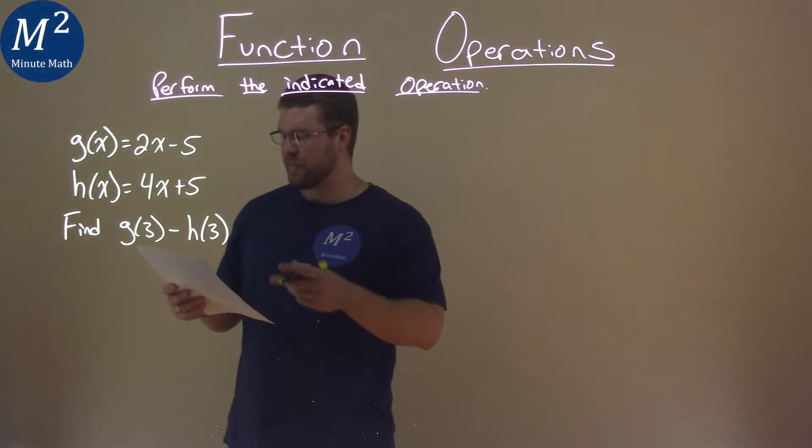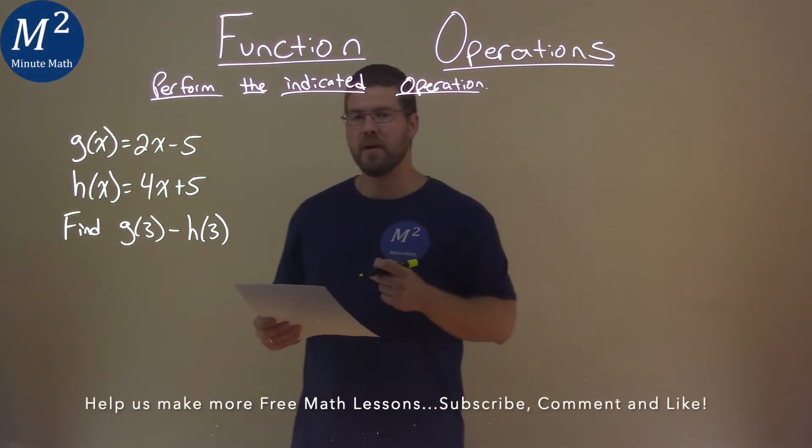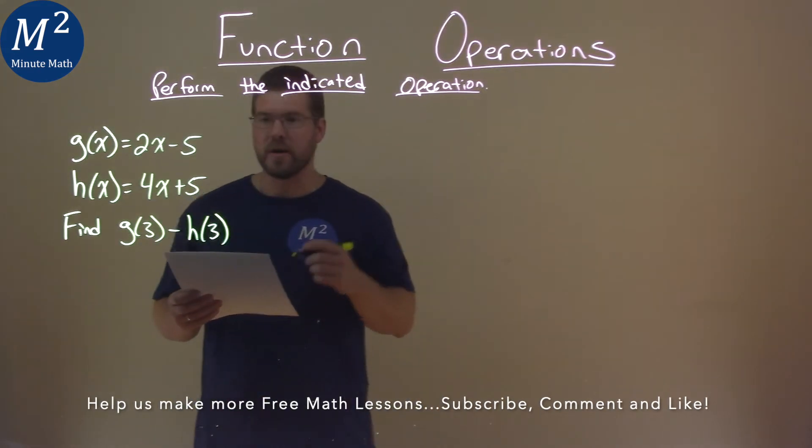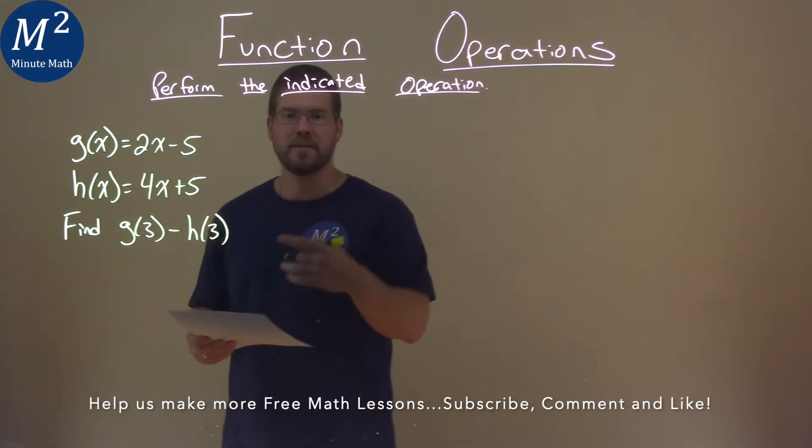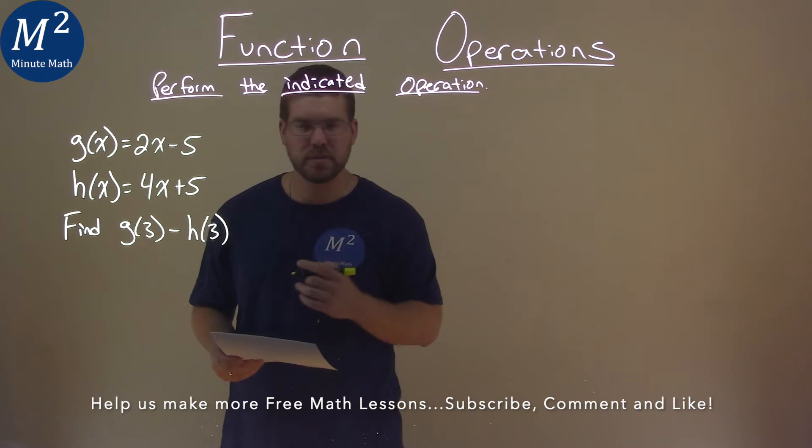We're given this problem right here, g of x equals 2x minus 5, h of x equals 4x plus 5, and we need to find g of 3 minus h of 3.